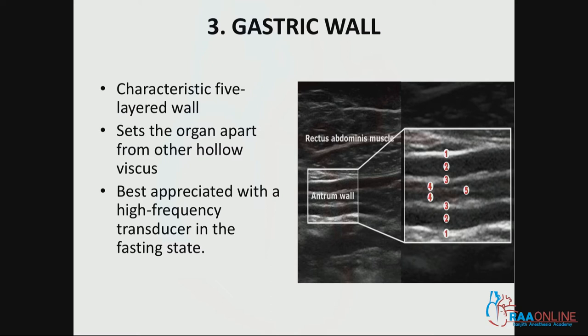So how do you differentiate between the stomach and the transverse colon? The stomach is a very interesting organ — it has a very characteristic five-layered wall. That picture looks very nice because it is taken by a linear probe. When doing the same scanning on a morbidly obese patient with a curvilinear probe, you may not see all five layers, but you will still see three. Whereas the transverse colon doesn't look like this — it is a very clear, single round structure.